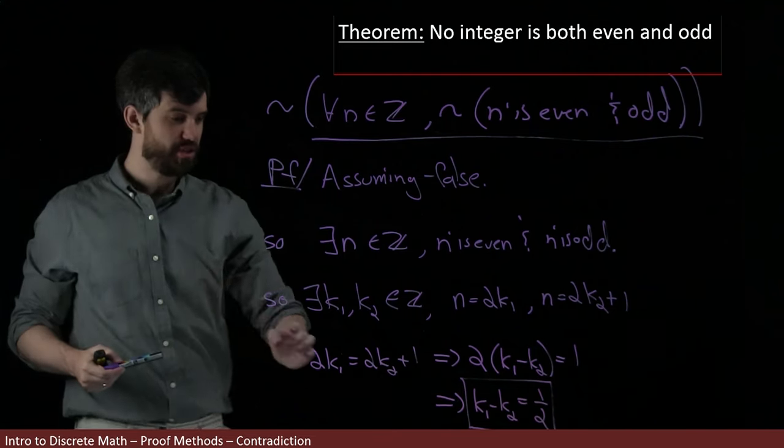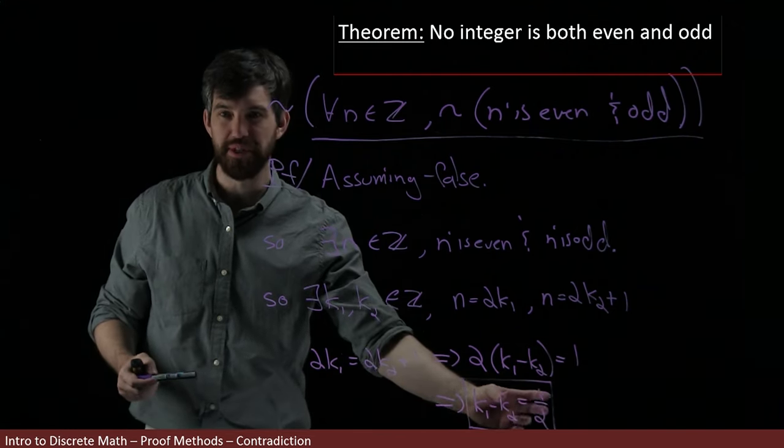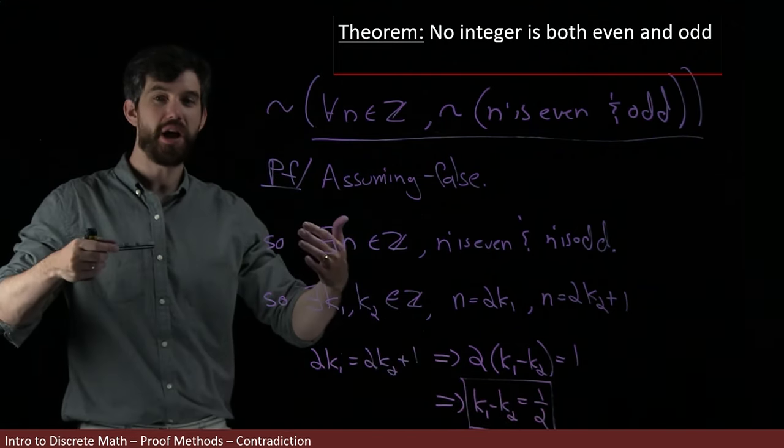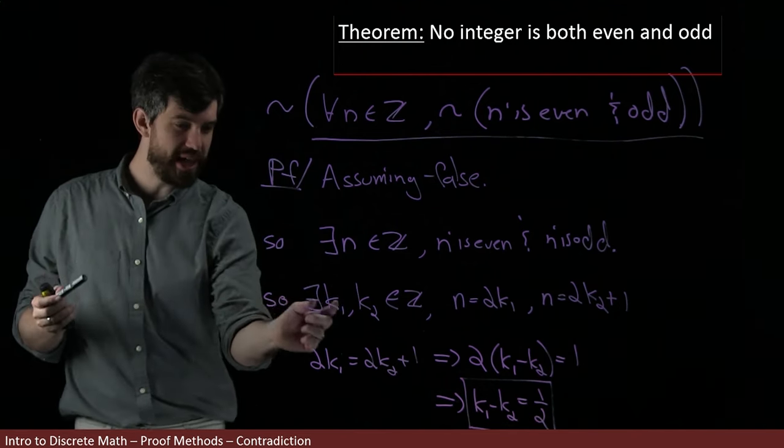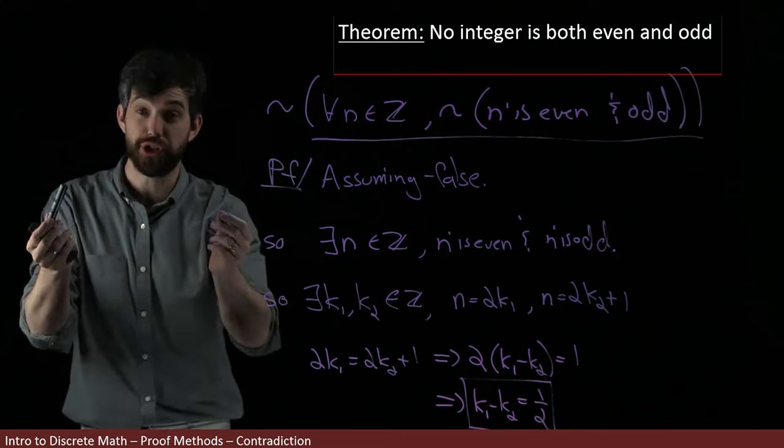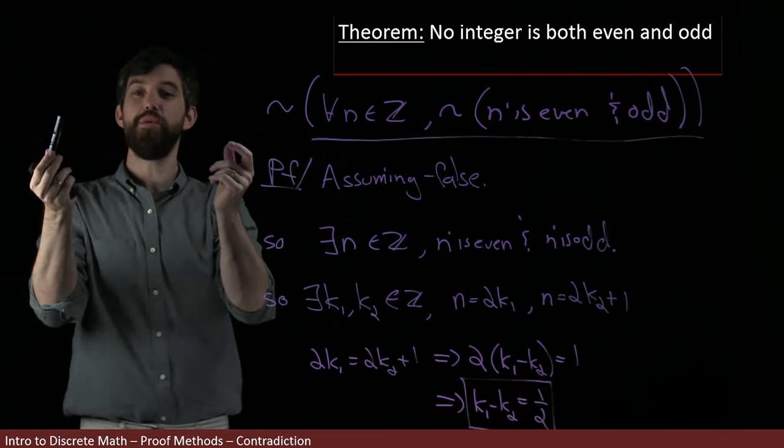Now, I claim that this result, that k1 plus k2 is equal to 1 half, is going to give me a contradiction. So why is that the case? Well, if I look at my k1 and my k2, here they were. They were both integers. So I've assumed k1 and k2 are integers.